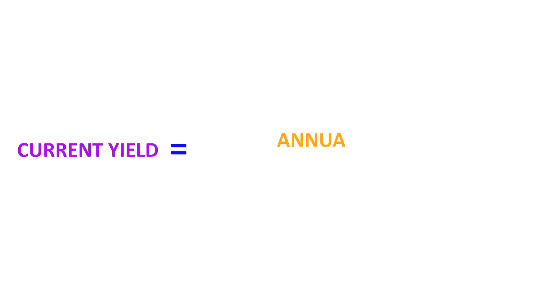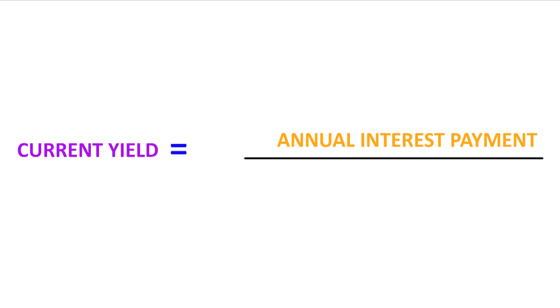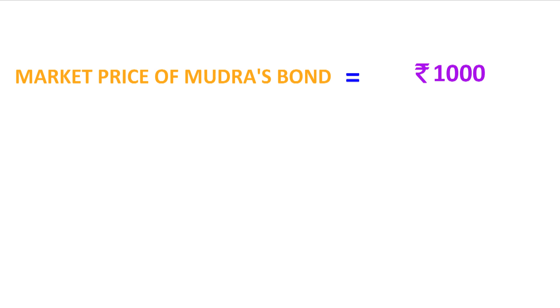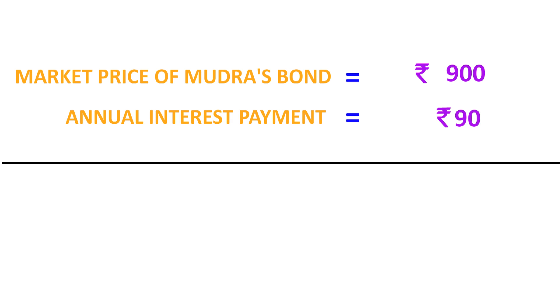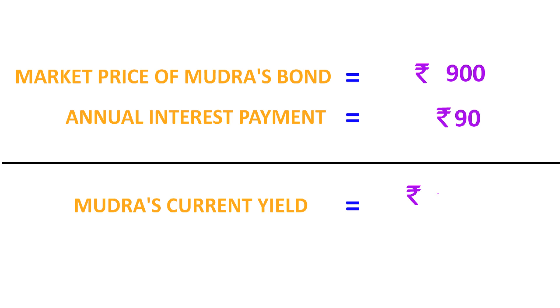Current yield is equal to annual interest payment divided by the current market price of the bond. If the market price of the bond Mudra wants to buy falls to Rs. 900, Mudra continues to receive the same Rs. 90 that the bond issuer had promised at the time of issue. So Mudra's current yield would be 90 divided by 900, that is 10%.